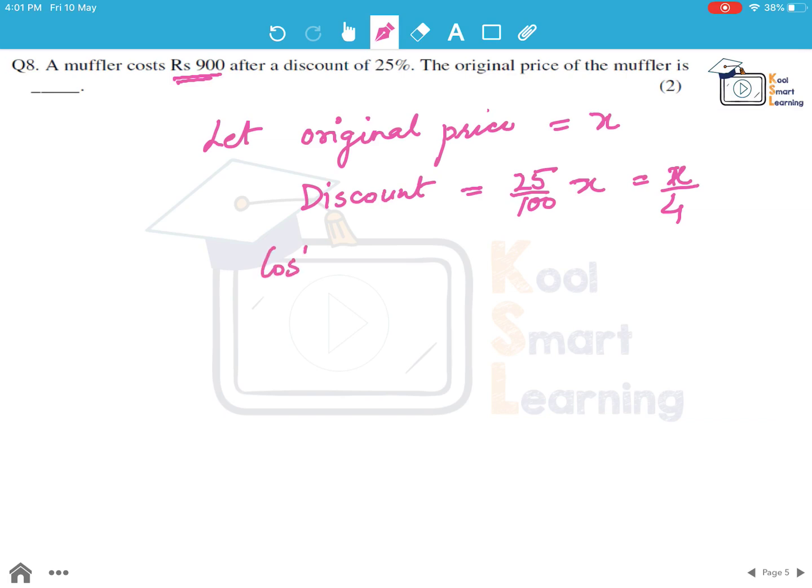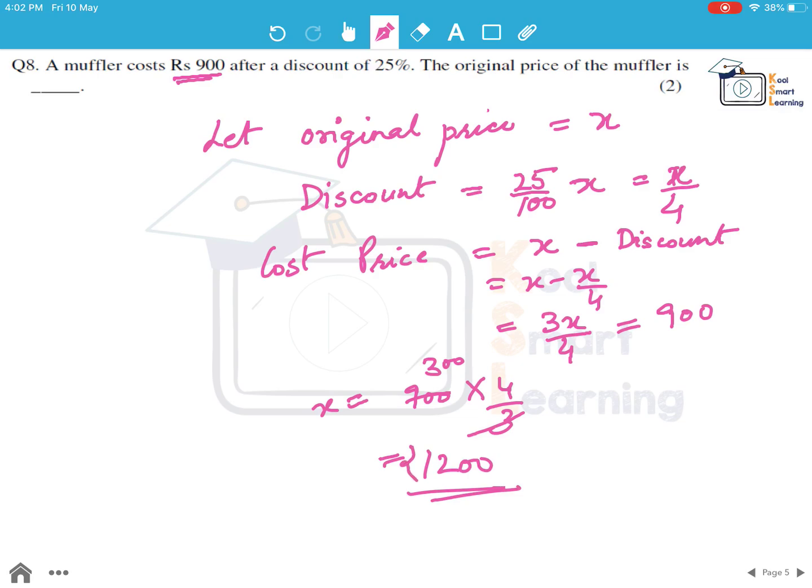So the cost price would be the original price minus the discount, which is X by 4. So X minus X by 4, which is equal to 3X by 4. And this is given to be 900. So X is equal to 900 into 4 by 3, and that gives us the value, the original price of the muffler to be 1200 rupees.